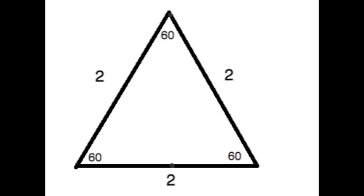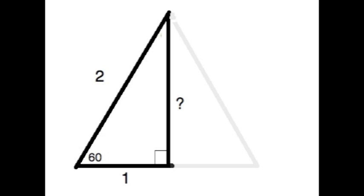Two, two, two, equilateral triangle, drop the peak to the base. And that's a right angle, bisects the base. So this length's one, figure out this side, then we're done.